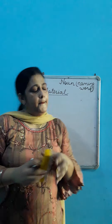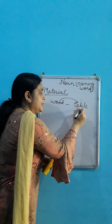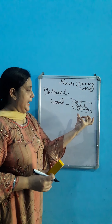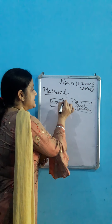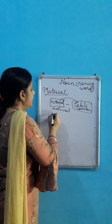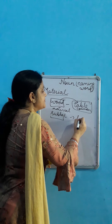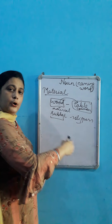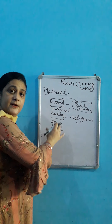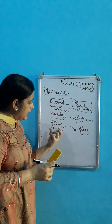Aap dekho wood kya hai — material noun. Agar wood se table banta hai, toh table common noun hai. Table to wood se bana hai — toh table kya hai? Table common noun hai. Jo material hota hai jis se koi cheez banti hai, wood material noun hai, aur table kya hai? Common. Agar rubber — rubber kya hai? Material noun. Ab rubber se slippers bante hain, toh woh kya ho gaya? Common noun. Glass kya hai? Material noun. Glass se cheez banti hai — agar glass se hum door banate hain, toh woh door common noun hoga. Door material noun nahi hai, glass material noun hai.